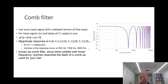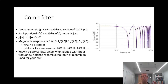The comb filter just sums some input signal with a delayed version of that input. It's not always used intentionally as an effect — it's often a problem. If you record a musical instrument with two microphones, those two microphones can be different distances from the instrument and so they will receive the sound at different times. If you sum those two microphones together, it's the same as summing the input signal with a delayed version of that input, and it produces the comb filter effect.